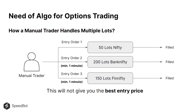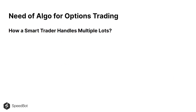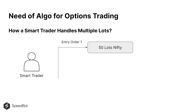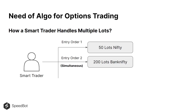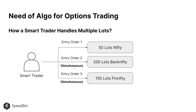Now let's see how a smart trader handles multiple lots. The smart trader places the first order with 50 lots of Nifty, and as soon as the first lot is punched, simultaneously the second order of 200 lots of Bank Nifty is placed. Along with that, the third entry order is simultaneously placed for 150 lots of Fin Nifty. All three orders are punched simultaneously, not with a minute of delay between each.